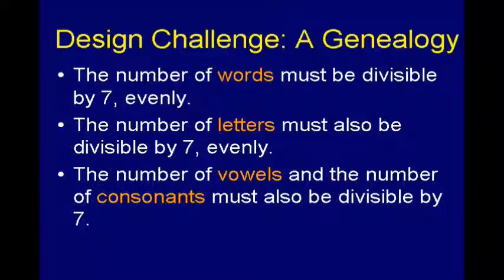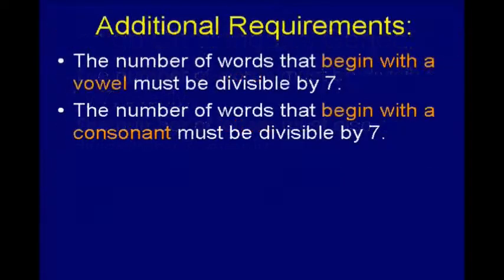I'm not through. I'd like the number of vowels to be divisible by seven. Well, that's getting a little harder, isn't it? It's harder to play with that one. I'd like the number of consonants to be divisible by seven exactly. Not only are the number of letters divisible by seven, the number of each category of letters — vowels or consonants — also divisible by seven exactly. That's starting to get difficult. How many feel they could still do that? No players, huh? I'm not even through.